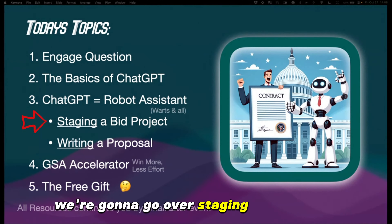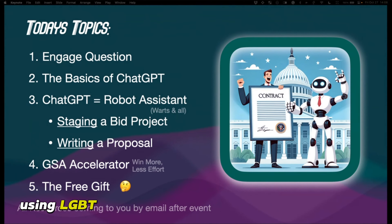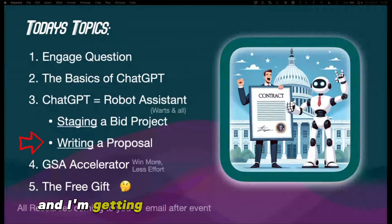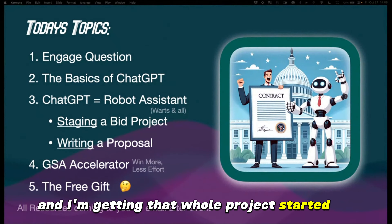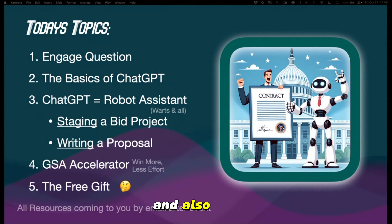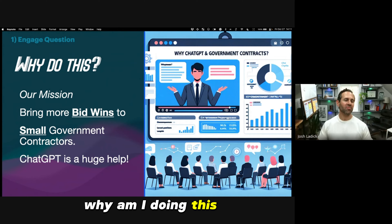We're going to go over staging a big project — just getting everything ready using ChatGPT in that context. Then we'll go into writing the proposal and getting that whole project started as a list of tasks. ChatGPT as a writer is, you know, it's a great writer — better than me. So why am I doing this presentation?